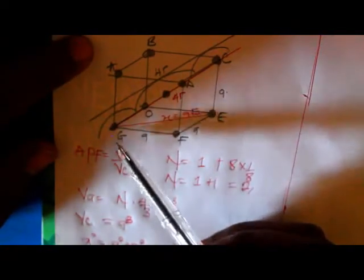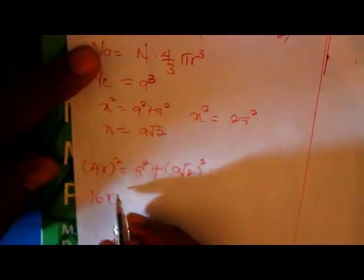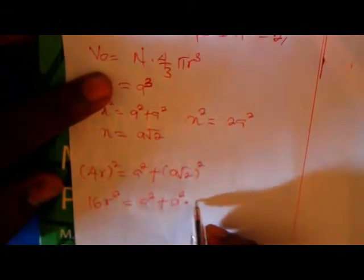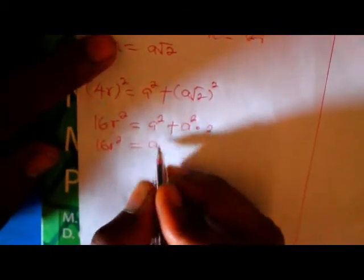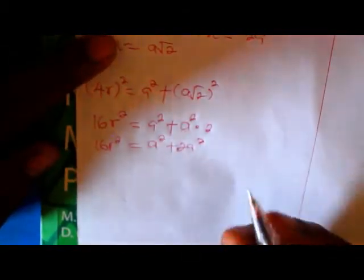So here is A root two. Since we get A root two, we can find the relationship between A and R using Pythagoras again by considering triangle GCE. Our hypotenuse is four R squared. Our opposite is A squared, adjacent is A root two squared. Very simple. Four R squared will be equal to A squared plus A root two squared, which is equal to A squared plus two A squared, which is equal to three A squared.